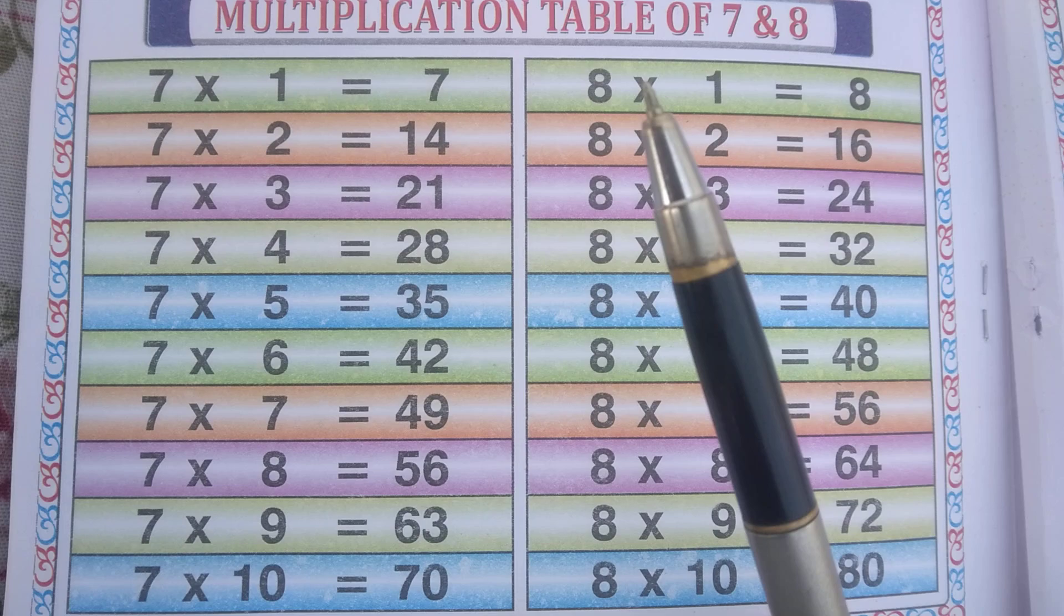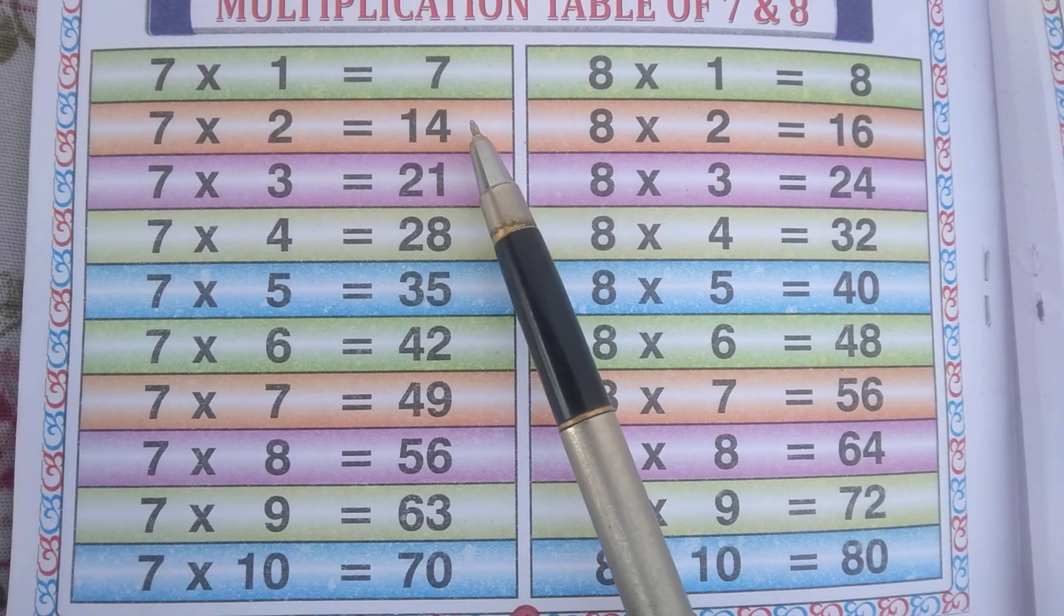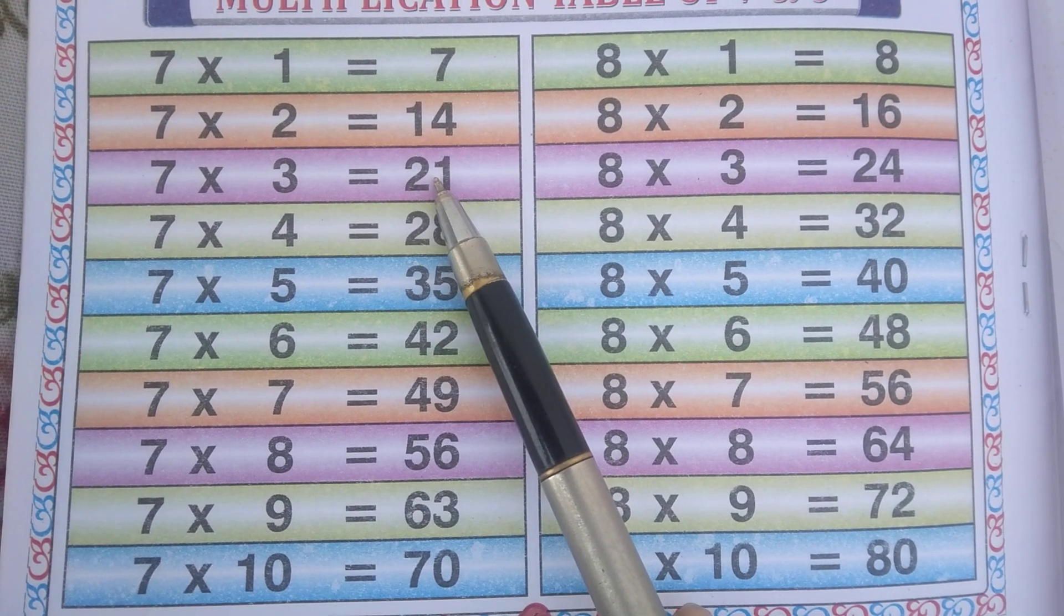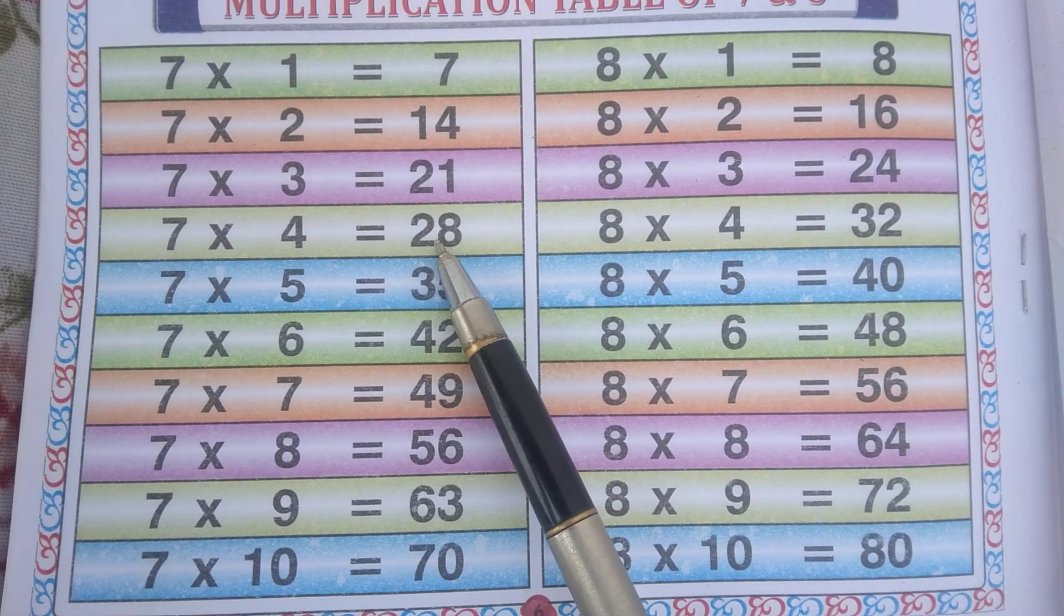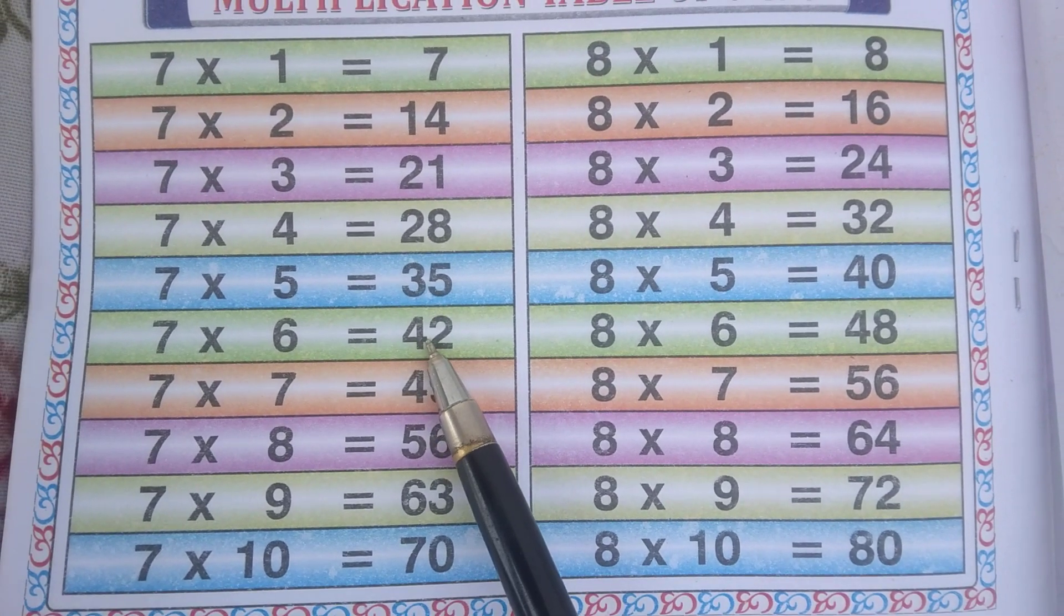Once again repeat, 7 1s are 7, 7 2s are 14, 7 3s are 21, 7 4s are 28, 7 5s are 35, 7 6s are 42,